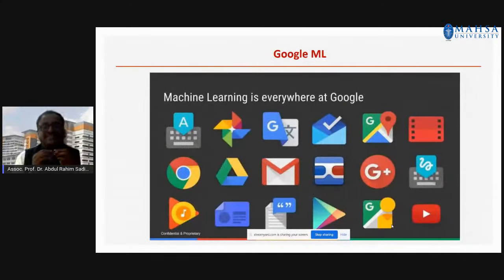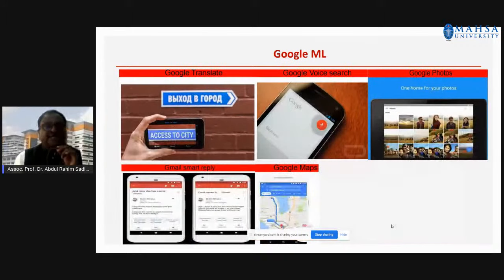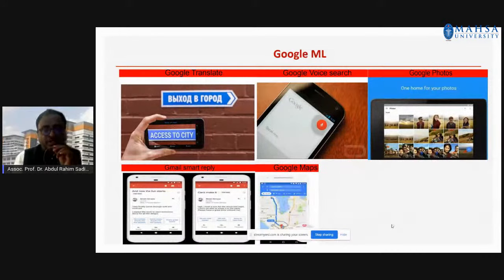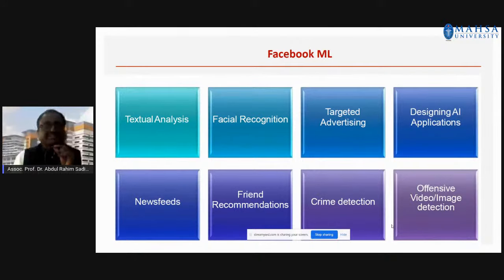In Google, all these applications you use every day — translation, Google Photos, Google Maps — are all part of machine learning applications. In Facebook, you are using facial recognition analysis and friend recommendations — these are the general applications.